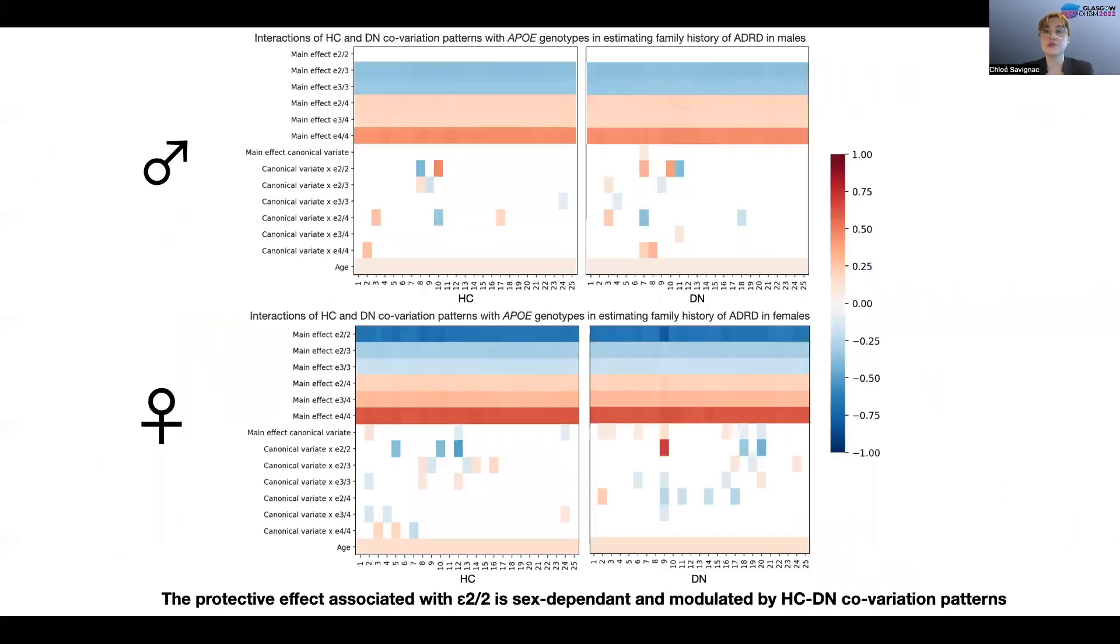Next, we looked at how individual expression of each of the 25 modes of hippocampus default network covariation interacted with the APOE genotypes in estimating Alzheimer's disease risk. We regressed family history of Alzheimer's disease, which is the binary outcome - yes, no - on a set of 14 regression parameters in males and females separately.